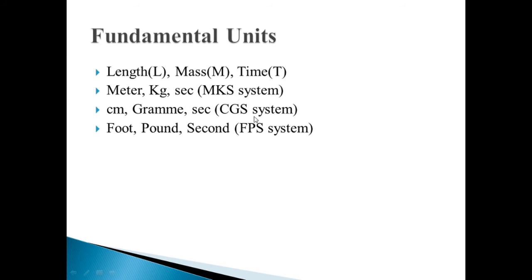The next system is the CGS system. In this CGS system, we measure length in centimeters, mass in grams, and time in seconds. This CGS system is used for smaller projects — when we mostly work with smaller quantities, we use centimeters, grams, and seconds to get a more accurate result.